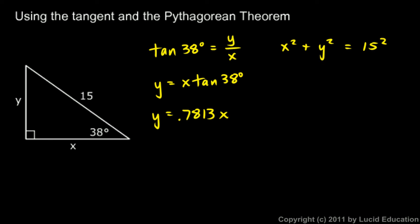So I get x squared plus 0.7813x, all of that squared, equals 15 squared.